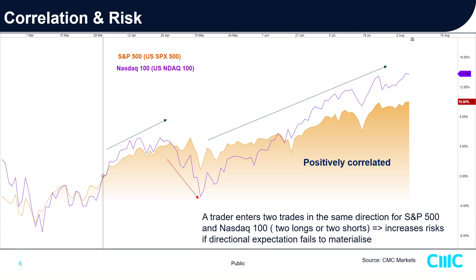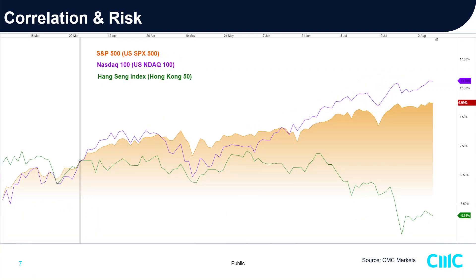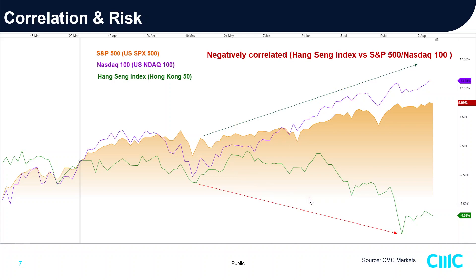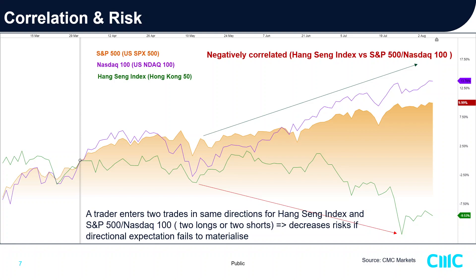Now let's add another instrument: the Hang Seng Index (Hong Kong 50), shown in green. Over the last three months — especially the last one month — the Hang Seng Index moves in the opposite direction to the S&P 500 and NASDAQ 100. The S&P 500 and NASDAQ 100 are going up while Hang Seng is coming down. So the Hang Seng Index is negatively correlated with the S&P 500 and NASDAQ 100. If a trader enters two longs or two shorts across these negatively correlated instruments, they are actually decreasing risk if the directional expectation fails, because both instruments are negatively correlated.